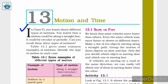Firstly, we have straight line motion — moving along a straight line, also called linear motion, in which the object travels in a straight line. Next, we have circular motion, in which the object travels around a circular path. And lastly, we have periodic motion.